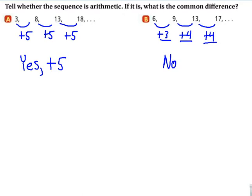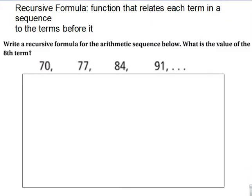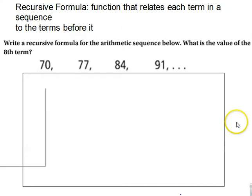Now we're going to get into what are two formulas. One's called recursive and one's called explicit. This first thing is the recursive formula. The recursive formula is a function that relates each term in a sequence to the terms before it. So the recursive formula helps us know what the next term is based on the terms that are in front of it.